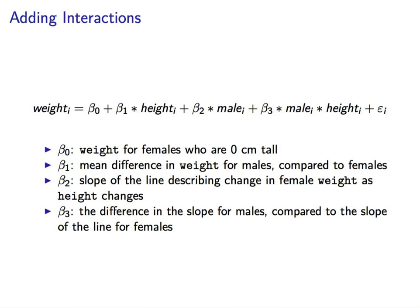So here we have our new model, including an interaction term between sex and height. Right down here, this beta 3. How do I interpret the coefficients for this model? So beta 0 is the intercept, and technically it represents the weight for females who are 0 centimeters tall. This doesn't seem to make much sense, but it makes our regression line fit the data better. So we include it in the model. This is also sometimes called the bias term, especially in machine learning applications.